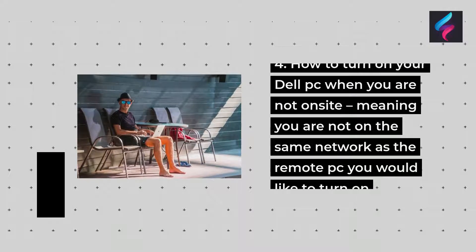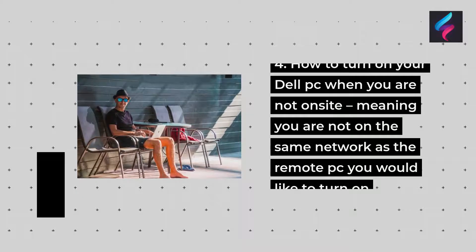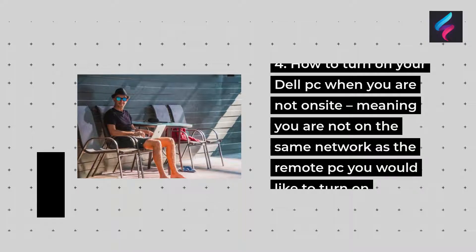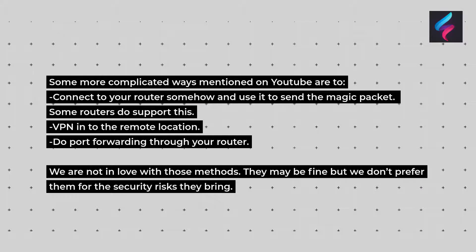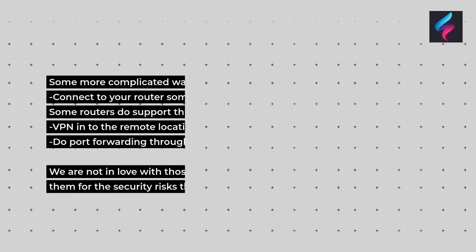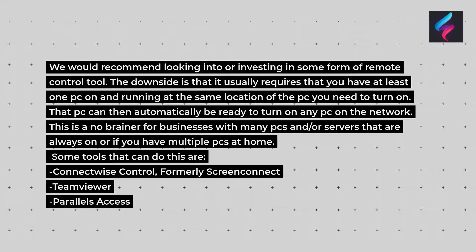How to turn on your Dell PC when you are not on site, meaning you are not on the same network as the remote PC you would like to turn on. Some more complicated methods include connecting to your router and using it to send the magic packet — some routers do support this — VPN into the remote location, or do port forwarding through your router. We are not in love with those methods; they may be fine but we don't prefer them for the security risks they bring. We would recommend looking into some form of remote control tool. The downside is that it usually requires at least one PC on and running at the same location as the PC you need to turn on. That PC can then automatically be ready to turn on any PC on the network — a no-brainer for businesses with many machines, servers, or multiple PCs at home.